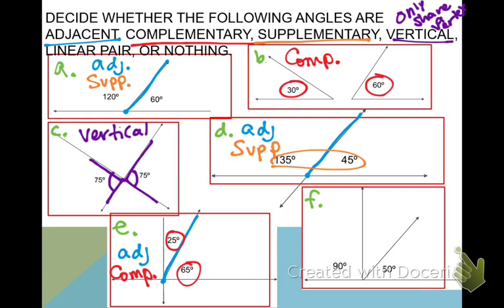All right, and then almost last, we have a linear pair. A linear pair has to be two things. Supplementary and adjacent. Letter A is adjacent and supplementary, so is it a linear pair? Yes. I'm going to write LP.